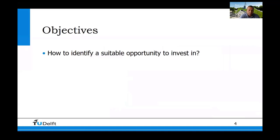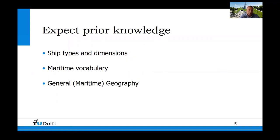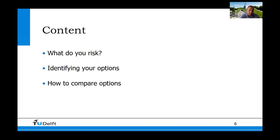The objective of this presentation is how to identify a suitable opportunity to invest. The expected prior knowledge is that you know what ship types there are and their rough dimensions, some maritime vocabulary, and some general maritime geography. The first part will discuss what do you risk, the second part will cover identifying your options, and the last part will be how to compare these options.